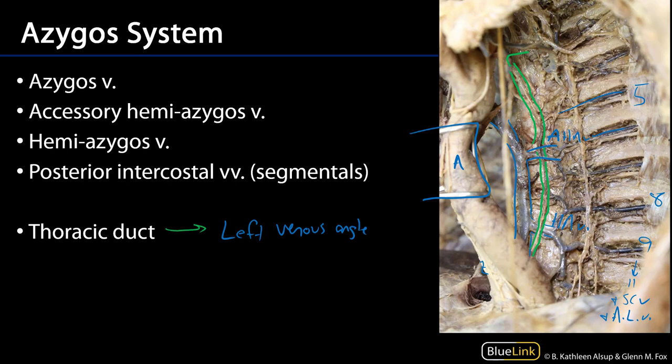The thoracic duct will return lymph from the entire body — with the exception of the right thorax, the right upper limb, and the right half of the head and neck — to that left venous angle. So we've talked about the azygos system and the thoracic duct. Thank you very much for your time.